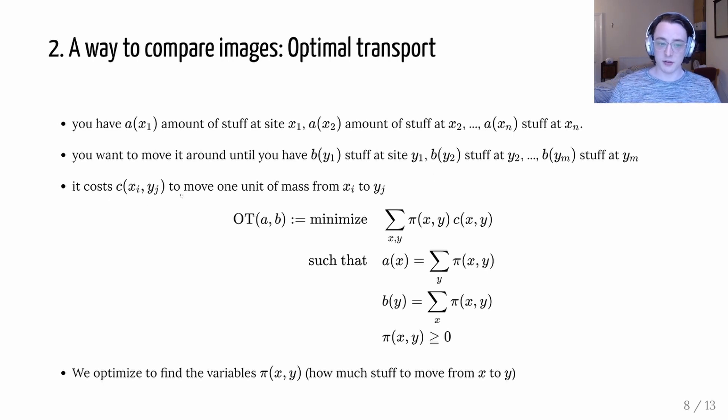And of course it costs some amount to move one unit of mass from one site to another. So it's c of xi yj to move one unit of mass from xi to yj. And optimal transport is this optimization problem that says we want to minimize the cost of moving the mass such that we can go from our initial starting configuration to the final configuration. And so the objective function says our variable π of xy will say how much mass do we want to move from site x to site y. And then the cost will be c of xy. And we sum that up to get the total cost.